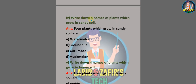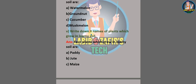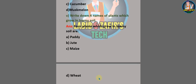Number four: write down four names of plants which grow in sandy soil. Answer: watermelon, groundnut, cucumber, and musk melon. Number five: write down four names of plants which grow in loamy soil. Answer: paddy, jute, maize, and wheat. These are the extra questions I have made for this chapter, and these are all the exercises of this chapter.